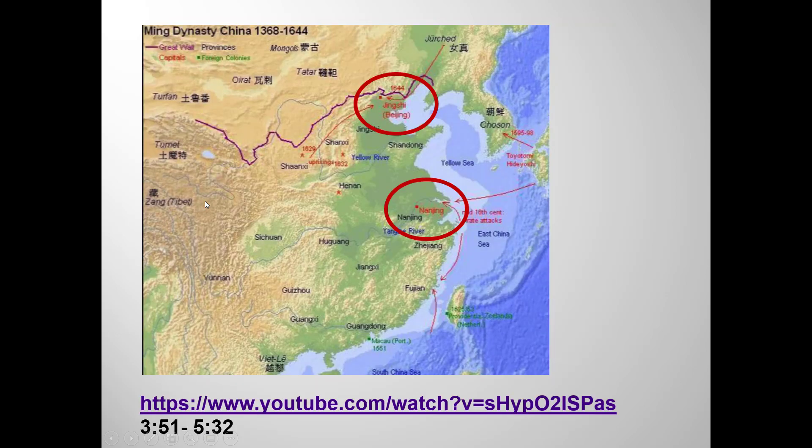The Ming dynasty initially established its capital in southern China, in Nanjing, but the third Ming emperor moved the capital back to Beijing. You need a break from the disembodied voice, so let's watch a short clip from a good National Geographic video about the Forbidden City.